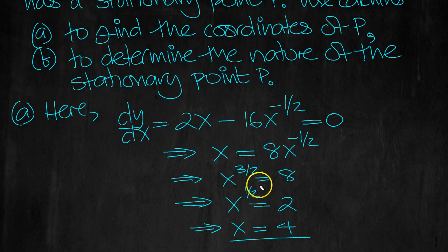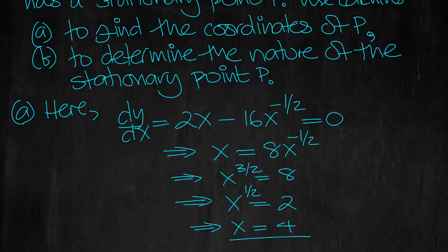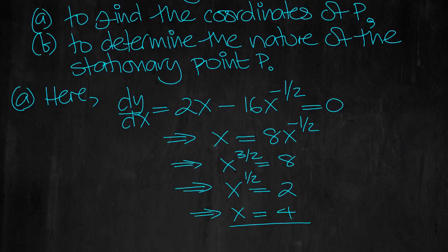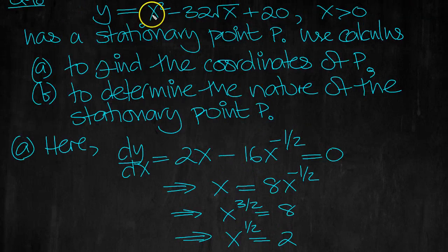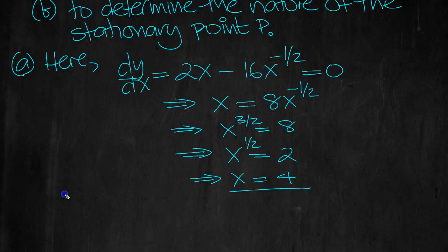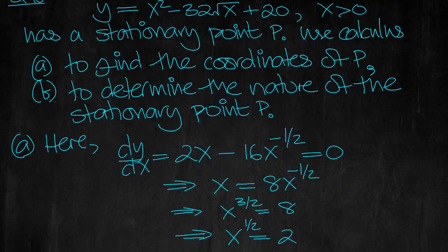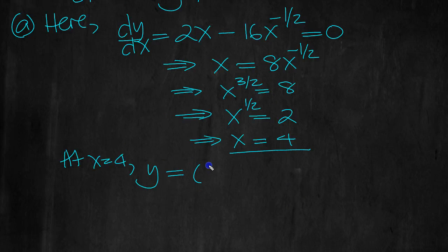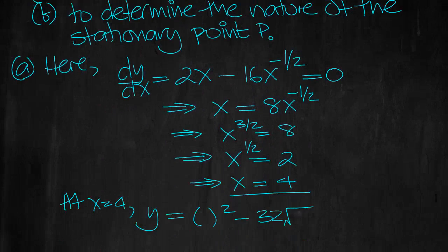There we go. x is 4. So x is 4, so what's y? Well, y is equal to this, isn't it? At x equals 4 then, y is equal to... Now what was it? It was x squared minus 32 root of x. x squared minus 32 square root of x, plus 20.